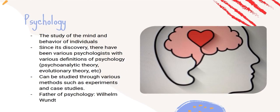Next, we have psychology, which is the study of the mind and behavior of individuals. This field was established in 1879. Since then, various psychologists have come up with different definitions of psychology. Some defined it as psychoanalytic — the study of the unconscious mind — while others believed it was evolutionary, using Charles Darwin's natural selection theory to explain psychology. It can be studied through various methods such as experiments, case studies, naturalistic observation, and other research methods.